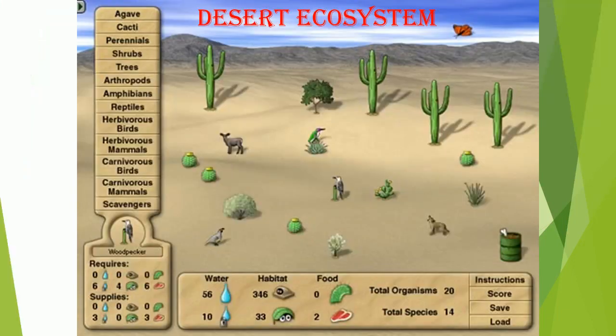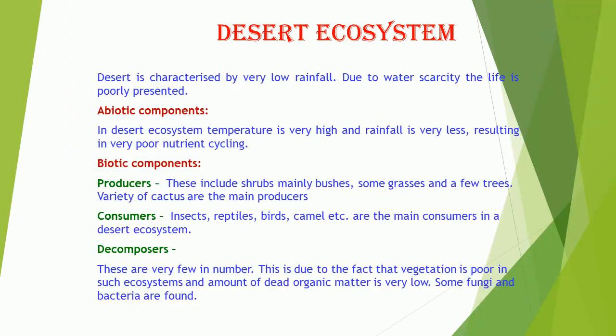Desert Ecosystem. Desert is characterized by very low rainfall. Due to water scarcity, life is poorly represented. In the desert ecosystem, temperature is very high and rainfall is very less, resulting in very poor nutrient cycling.